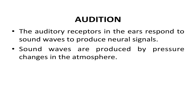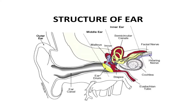What is audition and how does it take place? The auditory receptors in the ears respond to sound waves to produce neural signals. Sound waves are produced by pressure changes in the atmosphere. The eardrum is pushed and pulled by compression and expansion, and it vibrates in a pattern that corresponds to the sound.